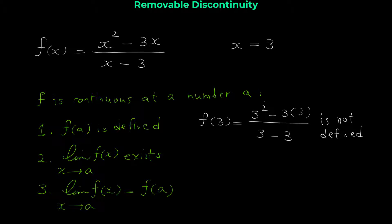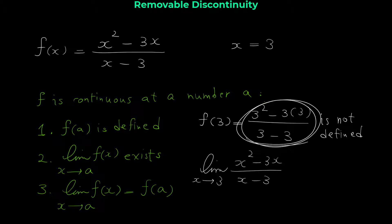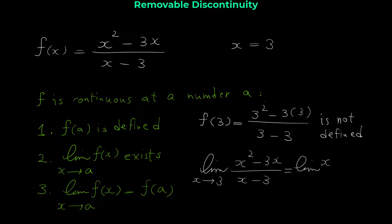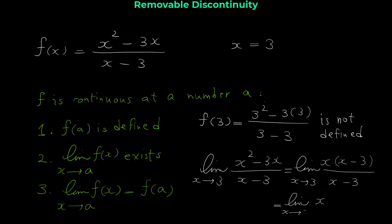To show the function has a removable discontinuity, the limit at 3 must exist. We want to find the limit of (x² - 3x) / (x - 3) as x approaches 3. We cannot use direct substitution since the denominator is 0. Instead, we factor x from the numerator to get x(x - 3) / (x - 3), then cancel (x - 3), leaving the limit of x as x approaches 3, which equals 3.